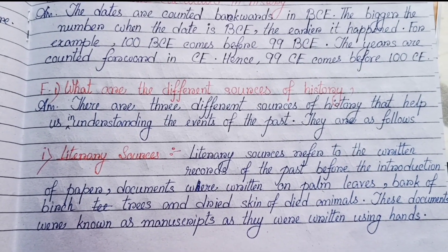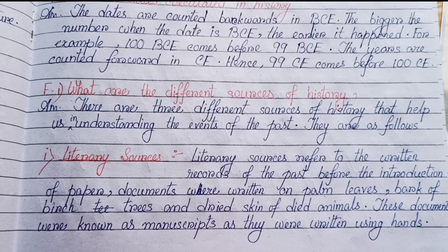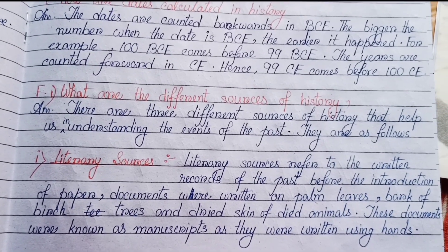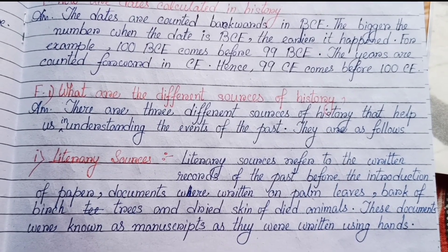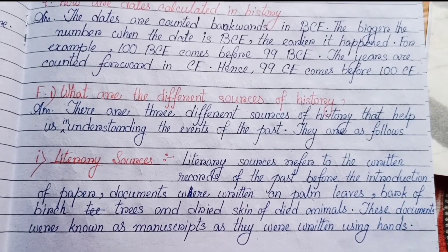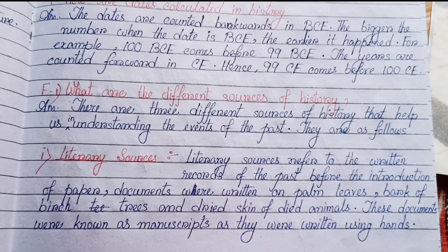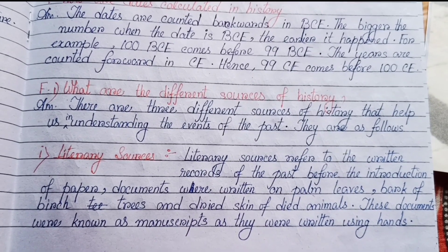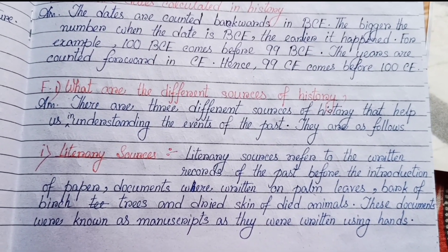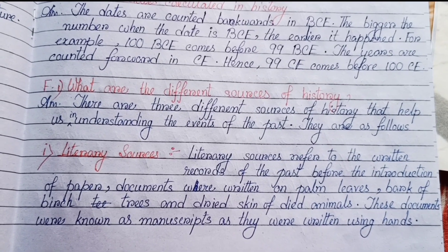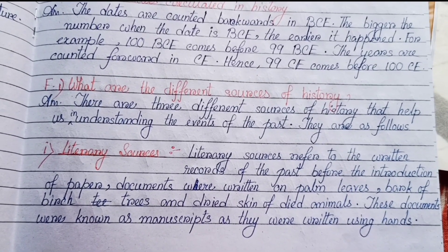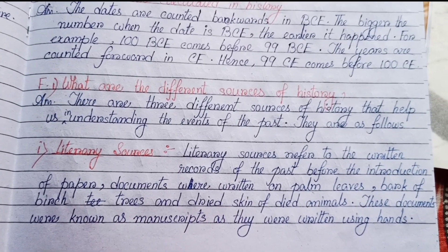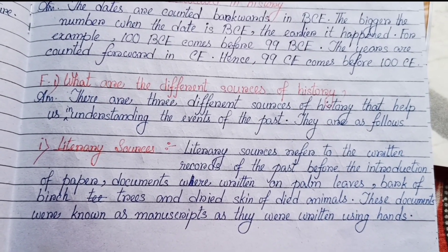Section F, Number one: what are the different sources of history? There are three different sources of history that help us understand events of the past. Number one: literary sources — these refer to the written records of the past. Before the introduction of paper, documents were written on palm leaves, bark of birch trees and dried skin of dead animals. These documents were known as manuscripts, as they were written by hand.